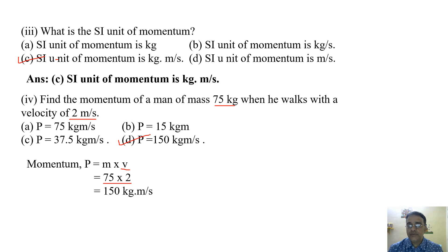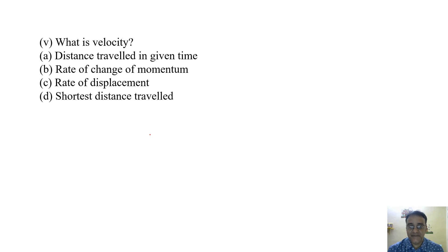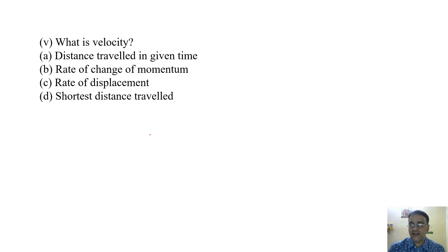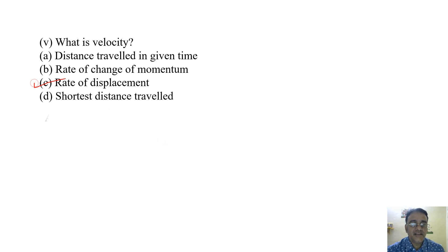Now the last question: what is velocity? The options are: distance traveled in given time; rate of change of momentum; rate of displacement; shortest distance traveled. Velocity is displacement upon time, that is, rate of displacement. So the correct option is C.